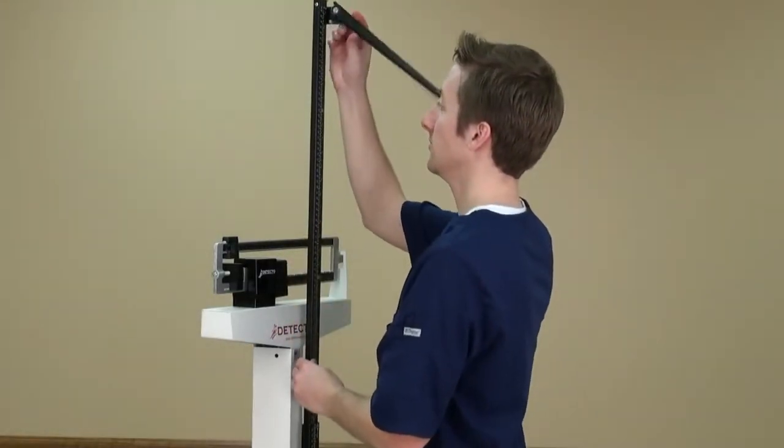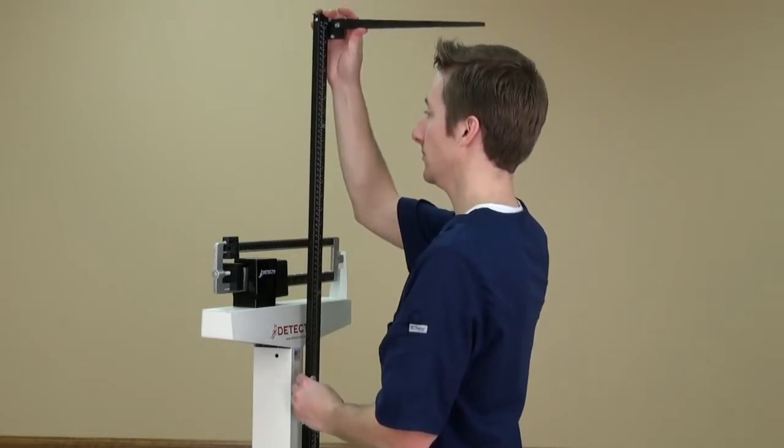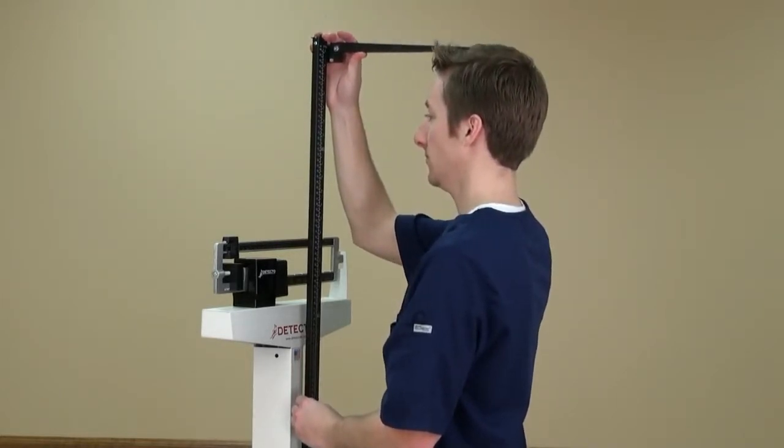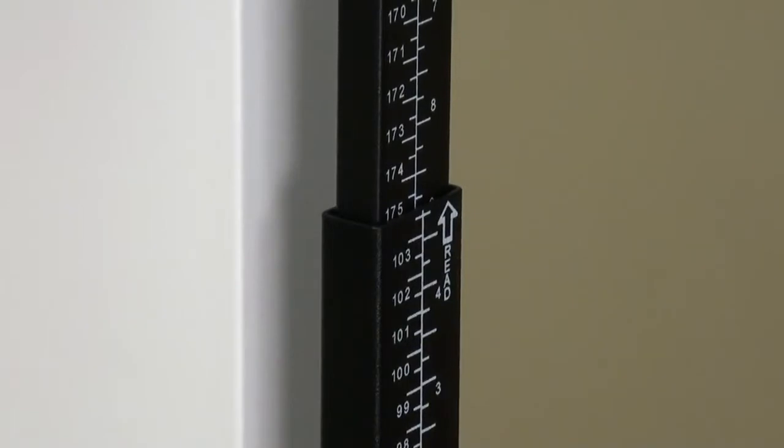Measuring height is quick and easy. Simply extend the height rod on the front of the column up, and the spoon out to the top of the patient's head, and then read the measurement along the front of the rod.